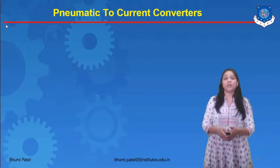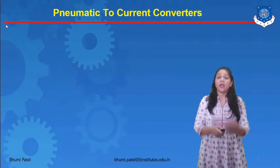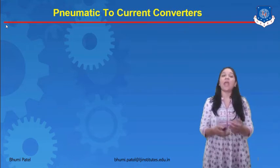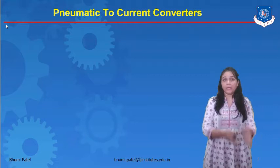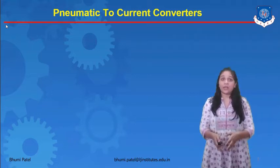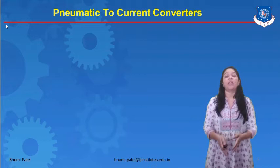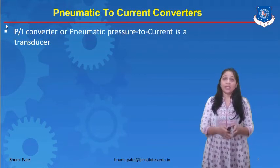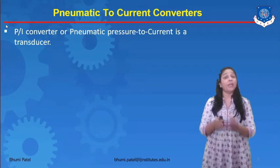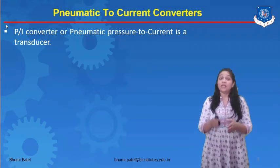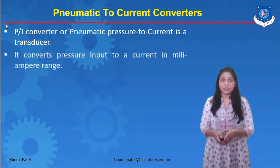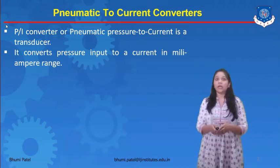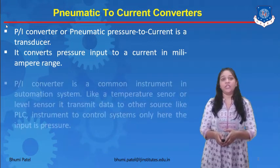The first converter is the pneumatic to current converter. In instrumentation, depending upon the requirement, we have to convert a pneumatic signal into the current signal. A pneumatic to current converter, or pneumatic pressure to current converter, is one type of sensor or transducer. It converts the pressure input into the current in the milliampere range.